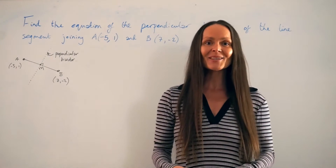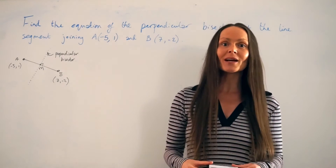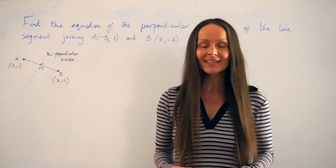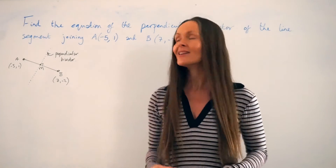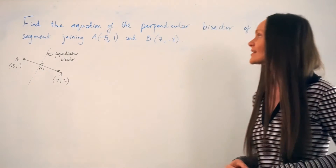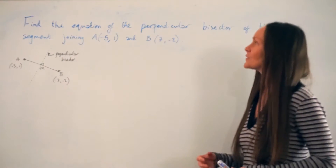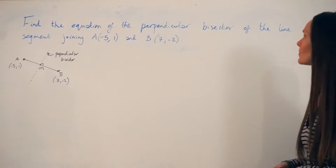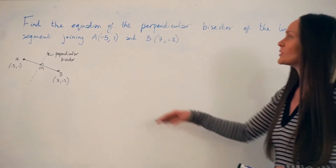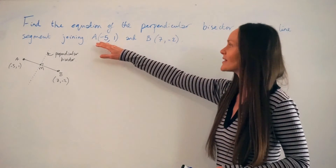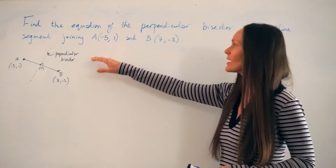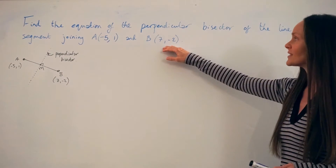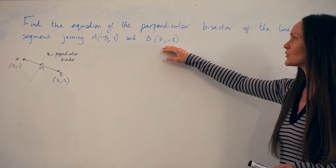Hey guys! In this lesson, I'm going to show you how to find the equation of a perpendicular bisector. In this example, it says: find the equation of the perpendicular bisector of the line segment joining the points A, which is at (-5, 1), and B, which is at (7, -2).